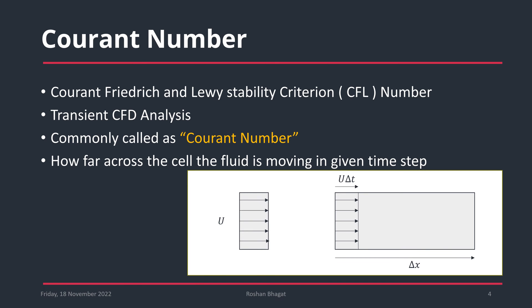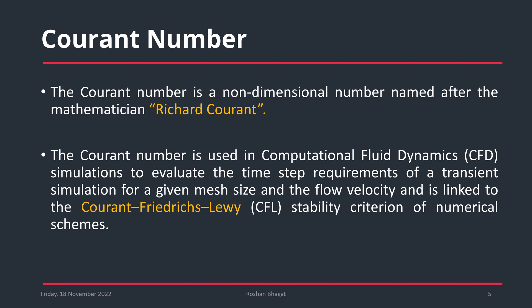The Courant-Friedrich-Levy stability criterion, called the CFL number, is especially used in transient CFD analysis. A simple definition is: how far across a cell the fluid moves in a given time step. Here, delta T is the time step, delta X is the distance covered by the fluid in delta T, and U is the fluid velocity. The Courant number is a non-dimensional number, named after Richard Courant.